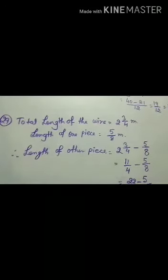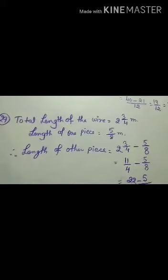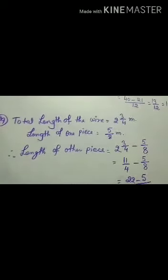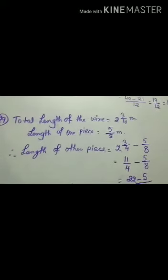Now, you have to cut it into two pieces. So, one piece is already given. Suppose that two students are given 20 rupees. One boy is given 8 rupees. So, all of you know that the other boy is given 12 rupees. The same process is here.